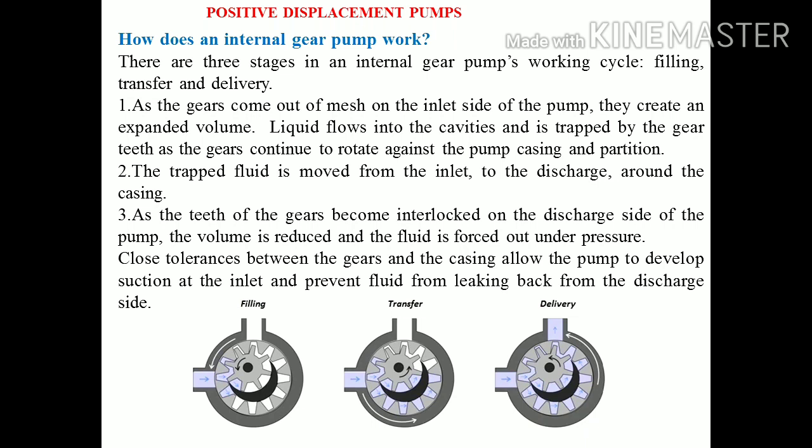Now coming to the internal gear pump. There are basically three operation stages in the internal gear pump working cycle. First, filling — the fluid comes in from the suction side of the pump. Second, transfer — it transfers the working fluid from the suction side towards the delivery side. Third, delivery — the fluid is removed from the casing to the delivery pipe. These three stages — filling, transfer, and delivery — are shown in the figure.